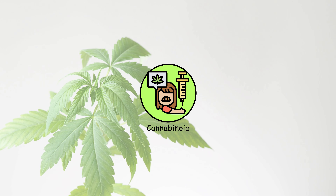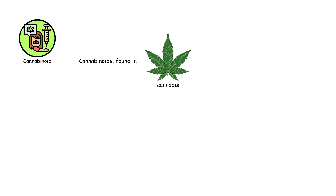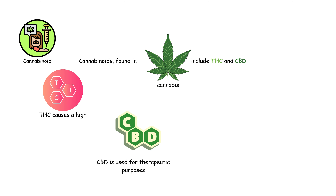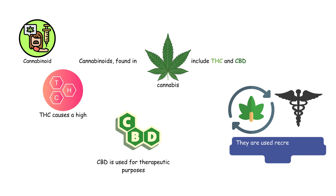Cannabinoids found in cannabis include THC and CBD. THC causes a high, while CBD is used for therapeutic purposes. They are used recreationally and medicinally but can impair cognitive function.